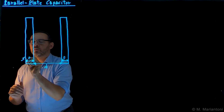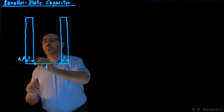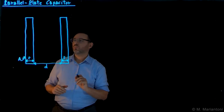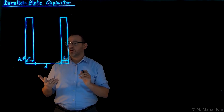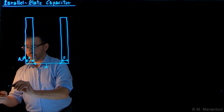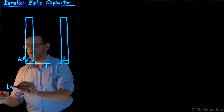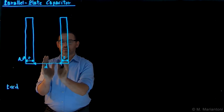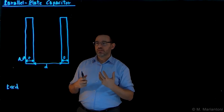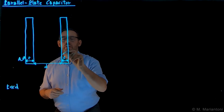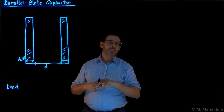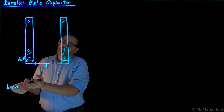The area of one plate we call capital A. The first assumption we make is that small t is much smaller than small d, so the thickness of each plate is negligible compared to the distance between them. It's still useful to consider some thickness to understand qualitatively what's going on, but mathematically we take t going to 0+.